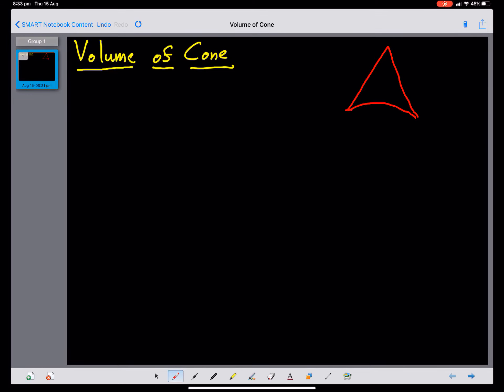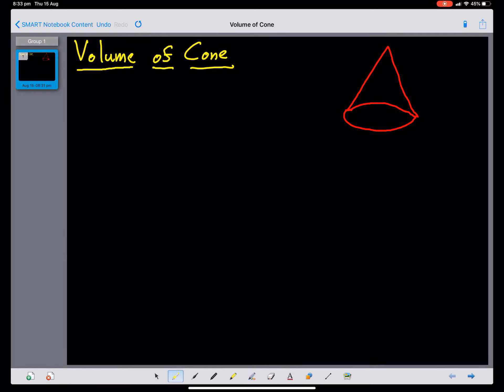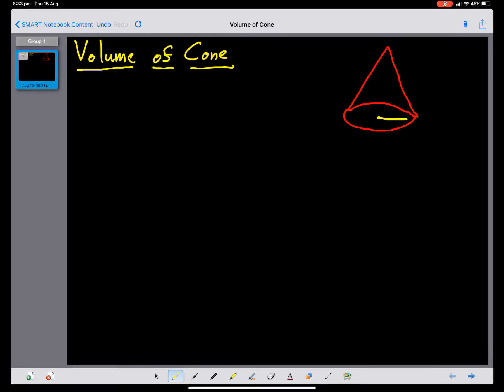A cone has a circular base, and a cone has a circular radius of R, and a perpendicular height of H.